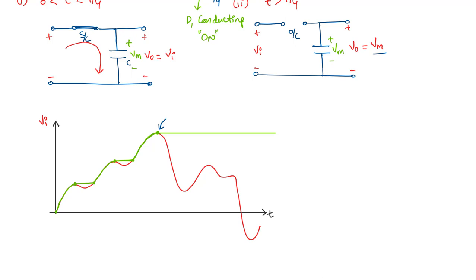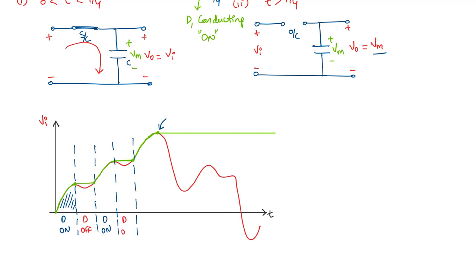Looking at the conduction and non-conduction regions: the diode is on during the segments where it allows current to charge the capacitor to follow the input voltage, and off during the hold periods. We can mark the conduction regions on the waveform to clearly show where the diode is on versus off.